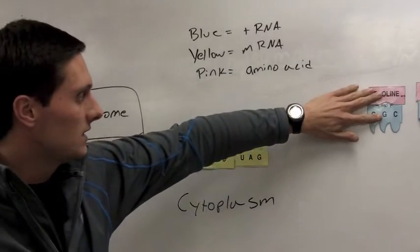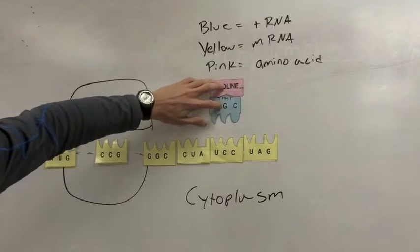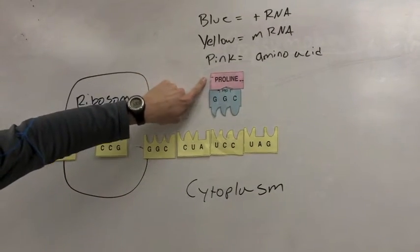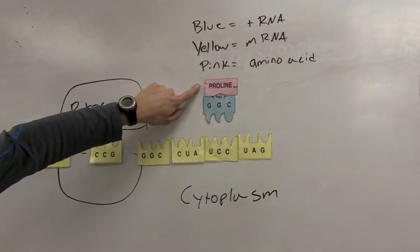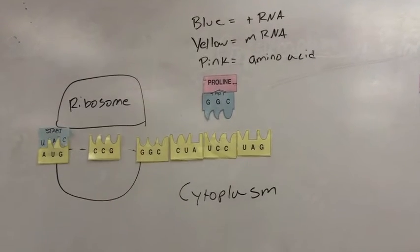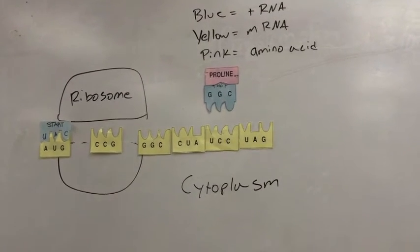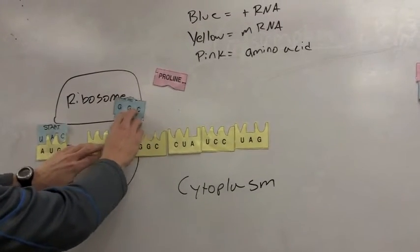And as we talked about in the notes, attached to this transfer RNA is an amino acid, and that's represented by the pink little puzzle piece here. And so this amino acid happens to be proline. And so this matches up.